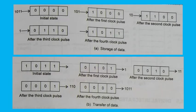Storage and shifting of information is very essential in digital systems. Digital circuits used for temporary storage and shifting of data are called registers. Registers are made up of storage elements called flip-flops. After each clock pulse, the input bit is shifted into the first flip-flop and the content of each flip-flop is shifted to the flip-flop to its right. Figure 1.8b shows the shifting out of data from the register.